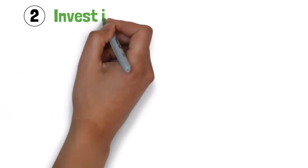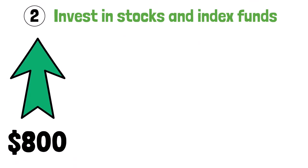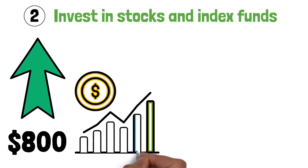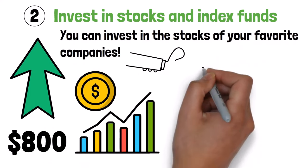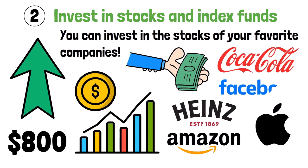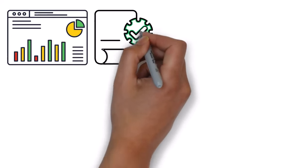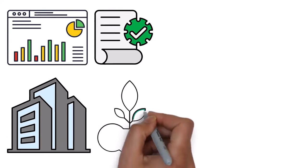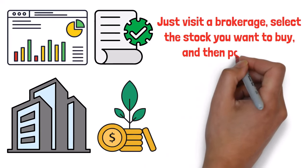Number two, invest in stocks and index funds. The quickest way to multiply your $800 passively is via the stock market. You can invest in the stocks of your favorite companies. For instance, you can invest in the stocks of Coca-Cola, Heinz, Amazon, Apple, Facebook, and so on. By buying a stock, you become an owner of a tiny part of the company. To invest in stocks, just visit a brokerage, select the stock you want to buy, and then pay for it. When these companies make money, so do you.